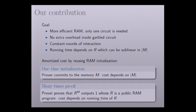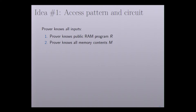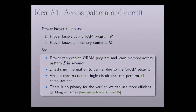To be more precise, our protocol has an amortized cost by reusing RAM initialization. We have a one-time initialization at the very beginning where the prover commits to the memory M, and this cost depends on the size of M. For each subsequent proof, the cost depends on the running time of the RAM program R instead of the size of M. For the first improvement, we observe that the prover knows all the inputs — including the public RAM program R and the memory content M — so the prover can execute the ORAM locally and learn the memory access pattern I in advance. Due to ORAM security, this access pattern I leaks no information to the verifier.